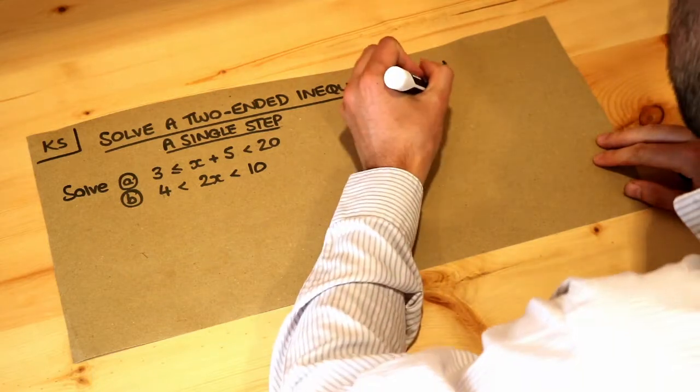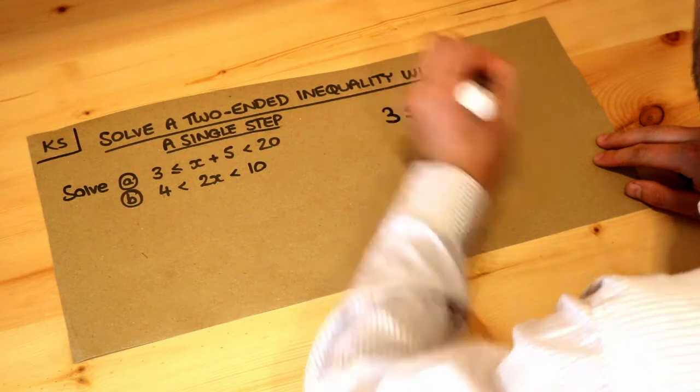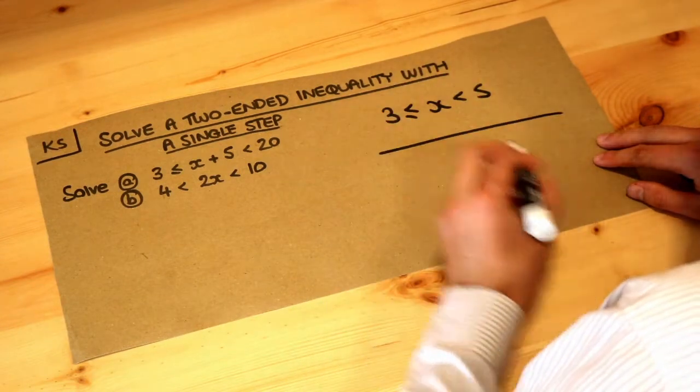So if I was to write for example that x was between 3 and 5 like this, then on a number line it would look like this.